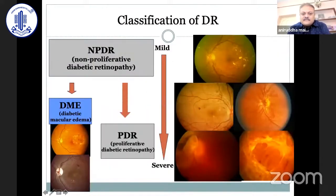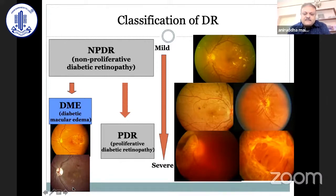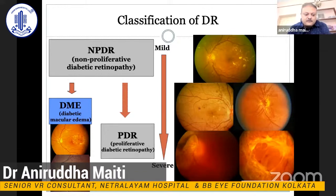The basic classification of diabetic retinopathy includes non-proliferative diabetic retinopathy, which progresses from mild to moderate to severe, and then advances to proliferative diabetic retinopathy. On the other hand, for maculopathy, we need to determine whether it is a center-involving or a non-center-involving maculopathy, depending on the retinal signs and the exact stage of the retinopathy.